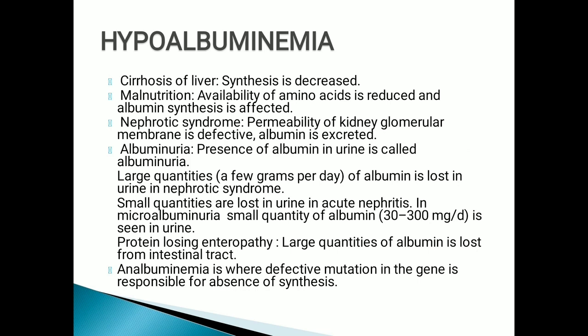Hypoalbuminemia causes have already been discussed. Albuminuria is the presence of albumin in urine. Large quantities of albumin are lost in nephrotic syndrome; small quantities are lost in acute nephritis and protein-losing enteropathies, where large quantities of albumin are lost in the intestinal tract.